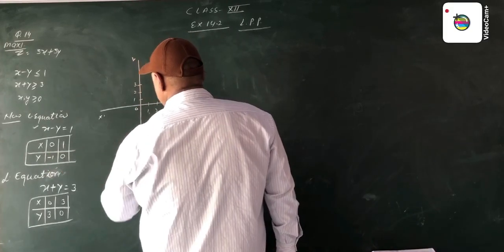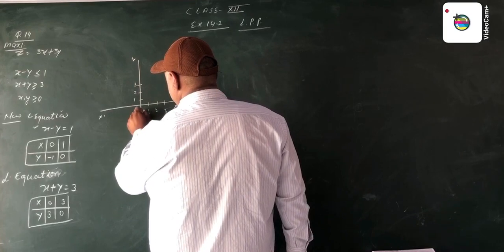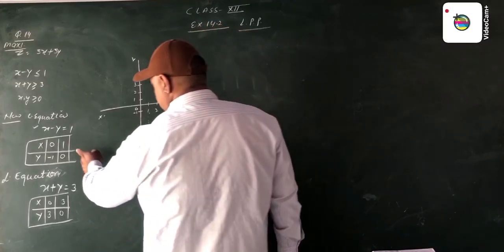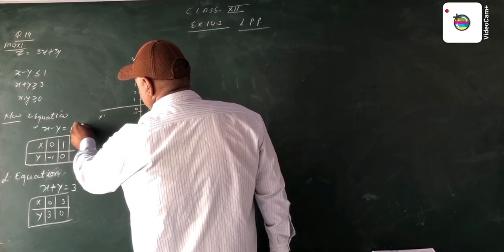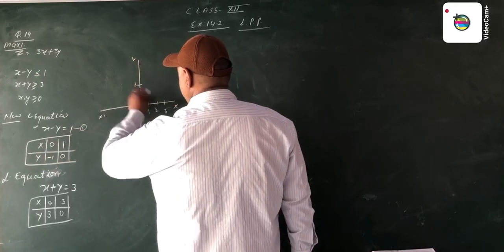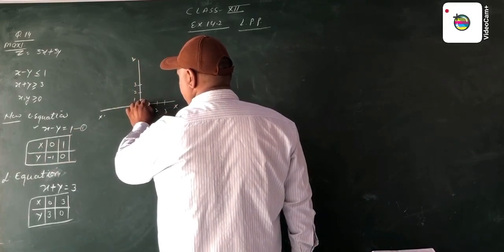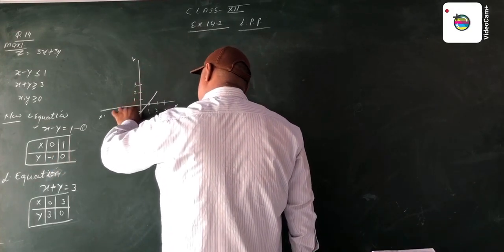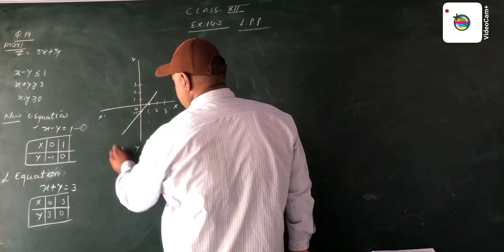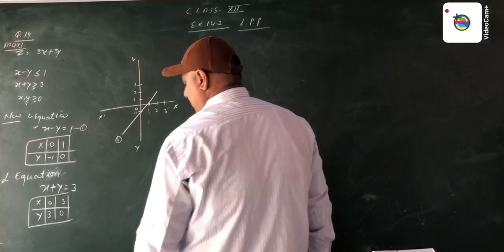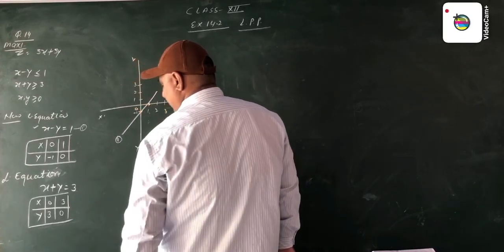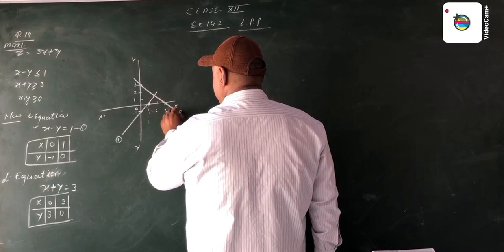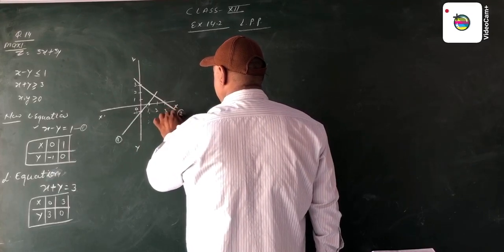Here the y value is minus 1, so this is the negative y region. We write the value minus 1. Now we make the graph of the first equation: x equals 1 and y equals minus 1. We plot these two points. This is the graph of equation first. For the second equation, the values are 3 and 3. We plot these points and draw the graph of equation second.